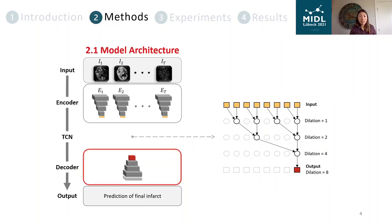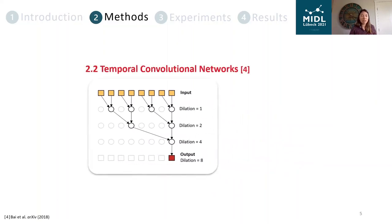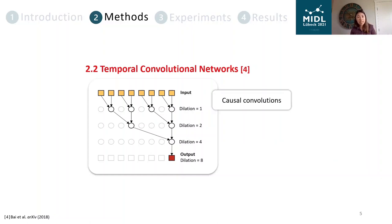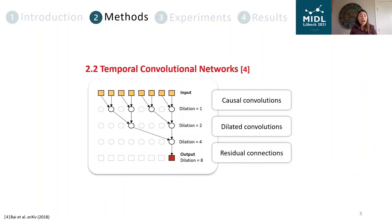The decoder, which has a symmetric layer structure to a single encoder, uses the output vector of the TCN to reconstruct the image and finally predict the probability of infarction at each voxel. TCNs are a variation of convolutional neural networks that have shown promising results in other medical image analysis problems, but have never been applied to acute stroke data. They make use of causal convolutions, dilated convolutions, and residual connections to hierarchically combine information from neighboring images. They are less computationally expensive and less memory intensive than conventional CNNs, making them ideal for training on large time series data such as 4D-CTP scans.